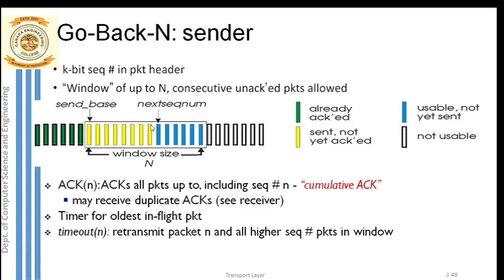Base points to the first packet; next sequence number points to the next packet to be transmitted. In the window, from base to next sequence minus 1 indicates all yellow packets - the unacknowledged packets. These packets are already sent to the receiver but acknowledgement has not been received. So unacknowledged packets range from base to next sequence minus 1, just behind the next sequence number pointer.